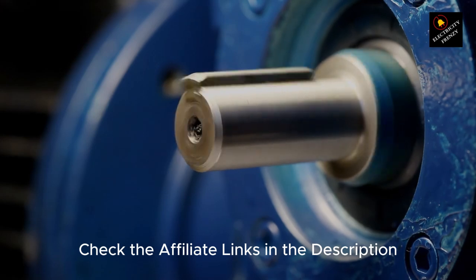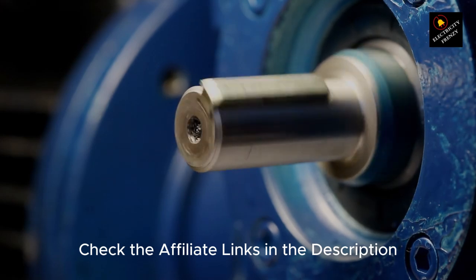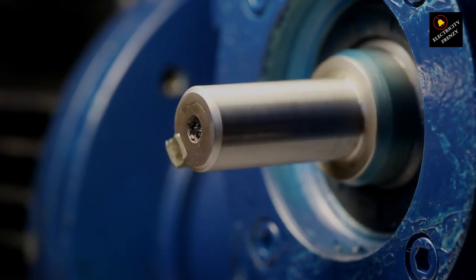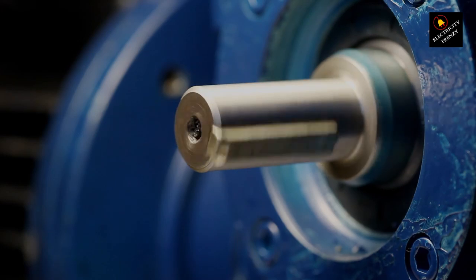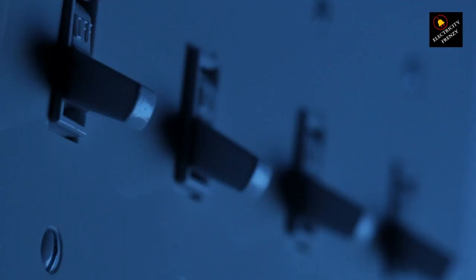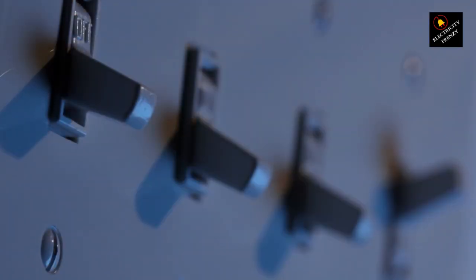Now, let's talk about torque. Torque is the twisting force that makes a motor spin. Lower voltage means lower torque. So not only is your motor struggling, but it's also not delivering the power it should. It's like trying to turn a big screw with a tiny wrench—not the best situation.